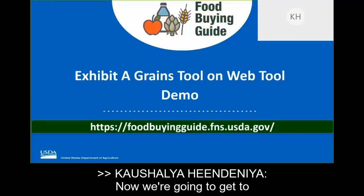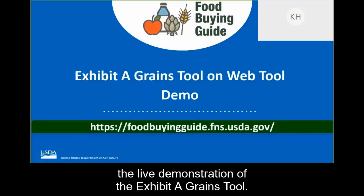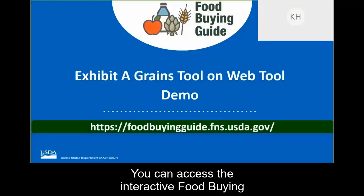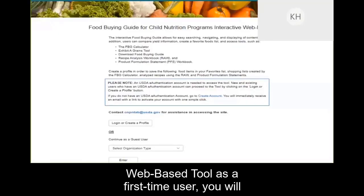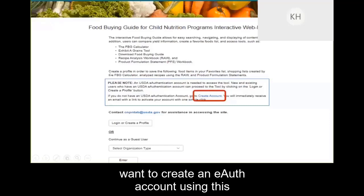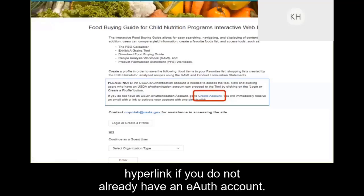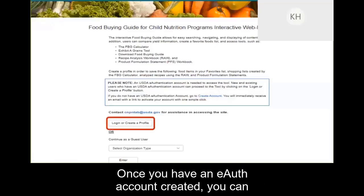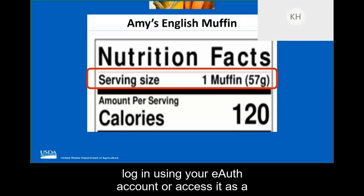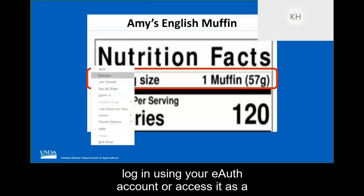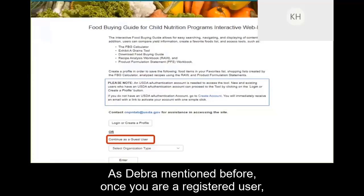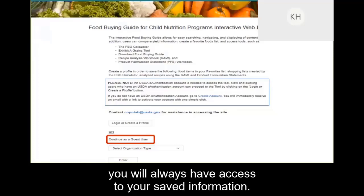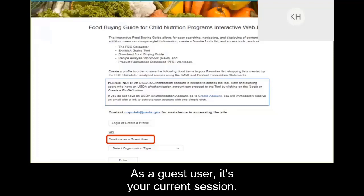Now we're going to get to the live demonstration of the Exhibit A Grains Tool. You can access the interactive Food Buying Guide using the web link provided on the slide. To access the tool as a first-time user, you will want to create an eAuth account using the hyperlink provided if you do not already have one. Once you have an eAuth account, you can log in or access it as a guest user with limited capabilities. As a registered user, you will always have access to your saved information. As a guest user, as long as your session is current and you haven't closed out, you'll be able to access your information.